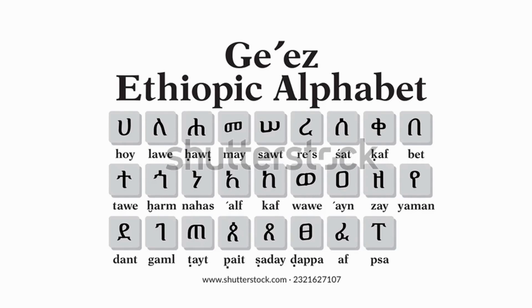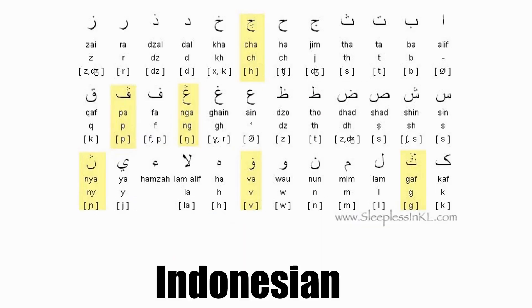That's Ge'ez — the Ethiopic alphabet. Ge'ez came from Arabic; it just descended from Arabic. And you got Amharic, which came from Ge'ez. This is Indonesian — now look at Indonesian. If you don't pay close attention, you would think this is Arabic, but no, this is Indonesian. The highlighted ones are the different tones. They just use Arabic script, but the tones are different.